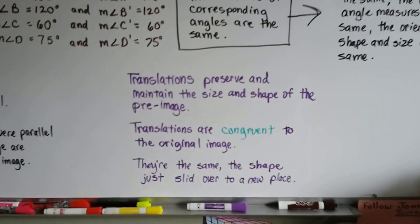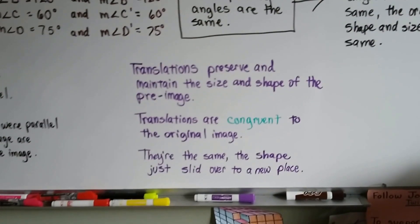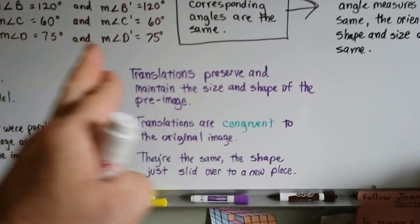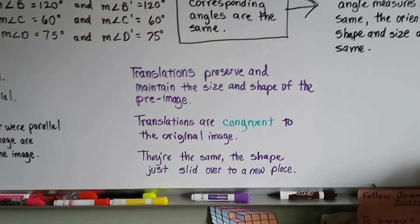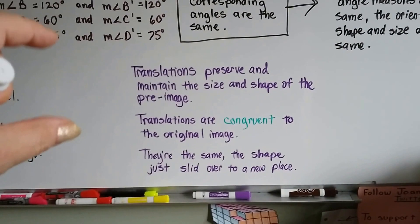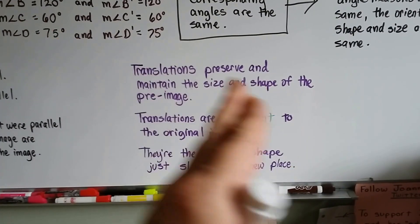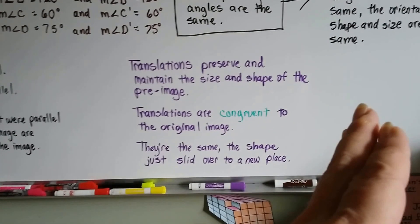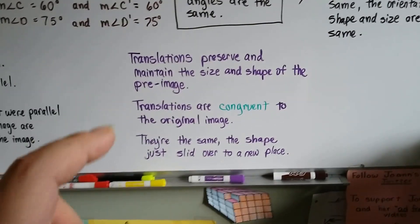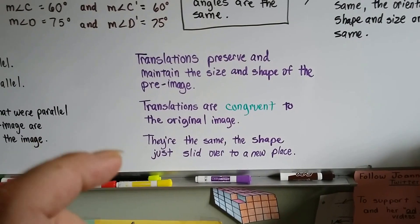Translations preserve and maintain the size and shape of a preimage. It's just the image slid. You have a preimage, that's the first shape, that's the original one, and it slides to a new position and becomes the image. Translations are congruent to the original image. They're the same shape, they just slid over to a new place.